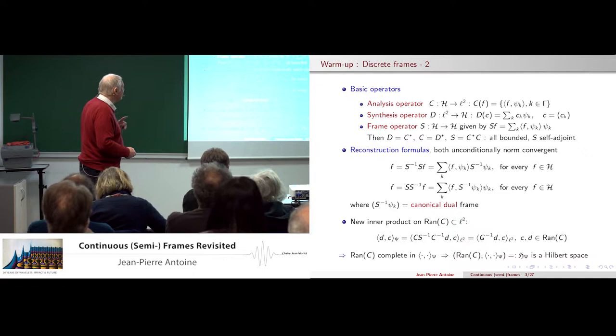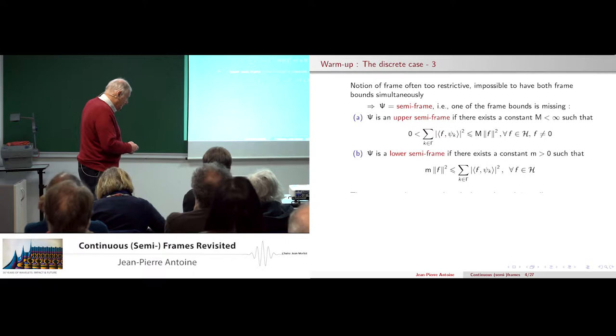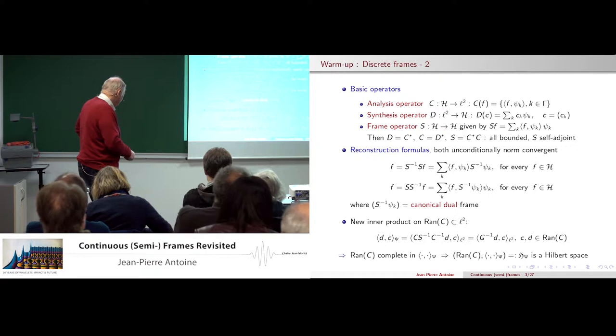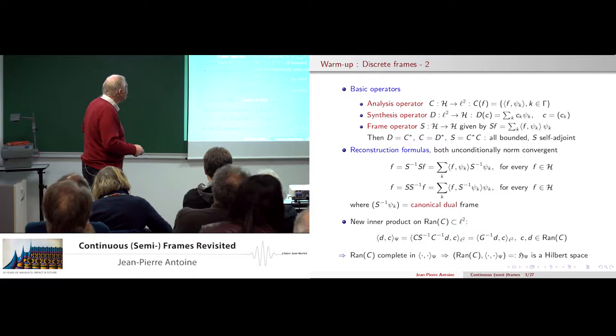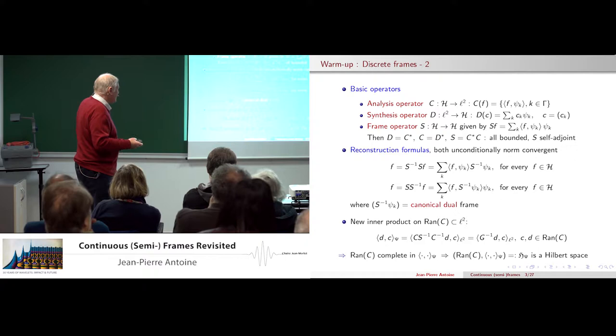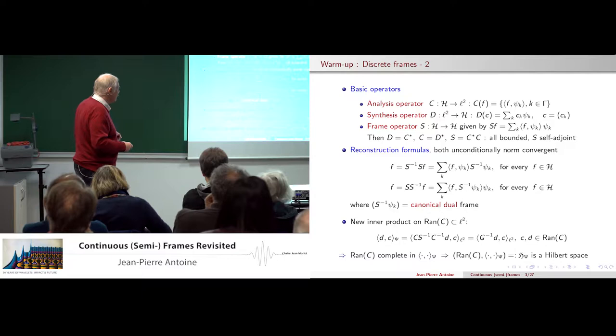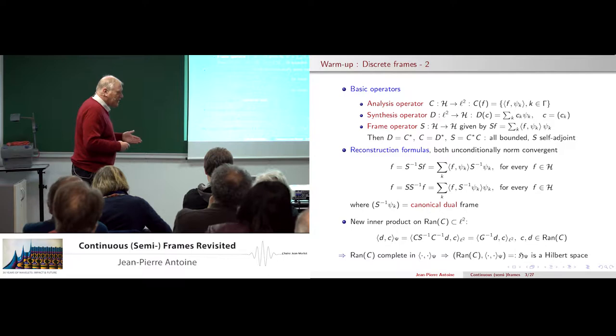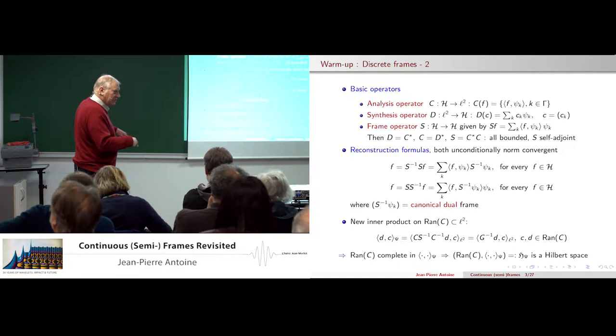Notice in passing that there is another inner product on the range of C, where C is the analysis operator. The range is in little L2, but not necessarily all of L2. You take the range, apply this new inner product, and find it is complete. So you have a new Hilbert space — the range of C with this new inner product. This will be generalized later.